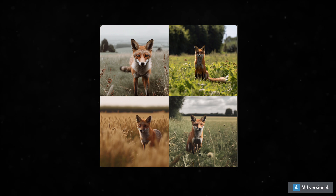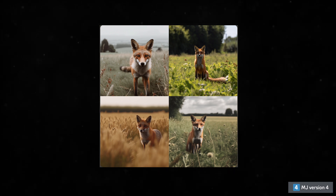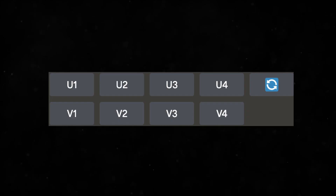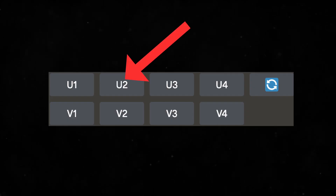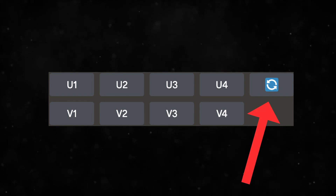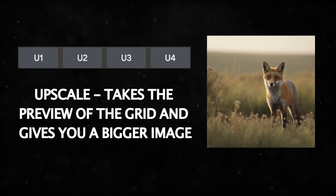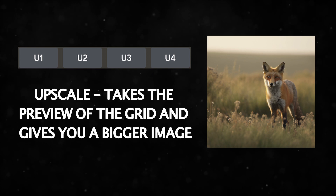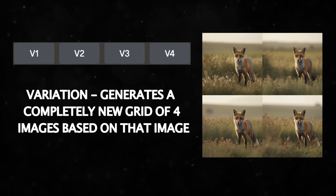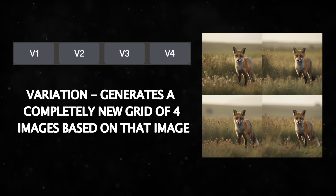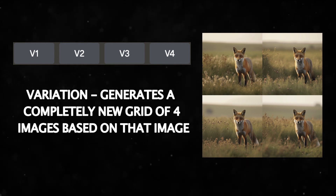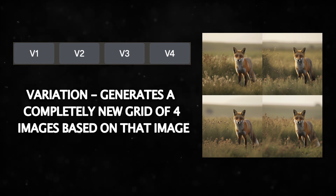Once it's completely generated, it gets saved to Midjourney's website and nine buttons appear below the images. Four of them are labeled with a U and another four are labeled with a V, and the other one has two arrows going in a little loop. The U stands for upscale — it takes the preview of the grid and gets you a bigger image. The V stands for variations, which starts from one of those images on the grid and generates a completely new grid of four images based on that image.